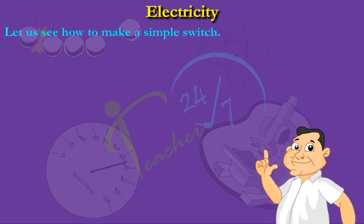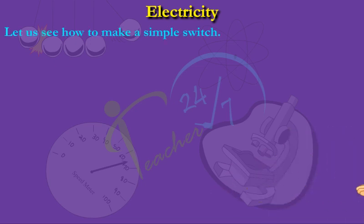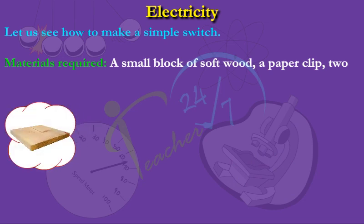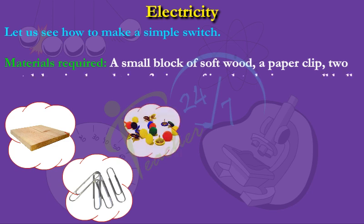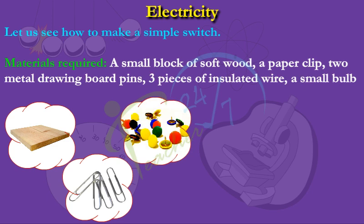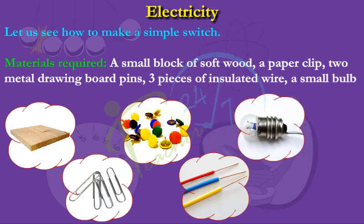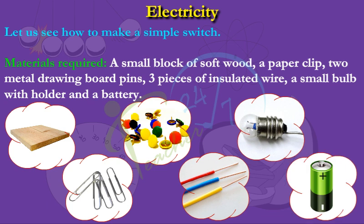Now we are going to learn how to make a simple switch. To make a simple switch, we need a small block of softwood, a paper clip, two metal drawing board pins, three pieces of insulated wire, a small bulb with holder and a battery.